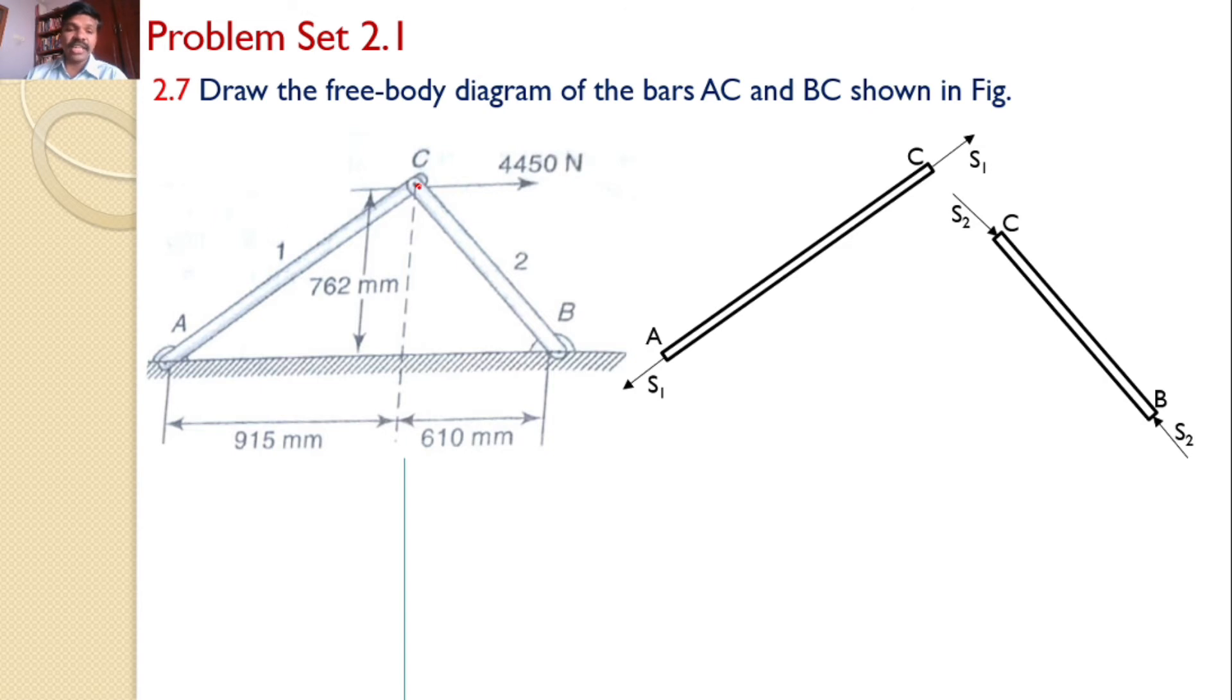What are the various forces acting at C? At C the force is 4450, one force is acting. Another force is the force in the bar AC, and another force is the force in the bar CB, but here the magnitudes and directions are also important. First let us calculate the angles made by the bars AC and CB. Let the angle made by bar AC with the horizontal be alpha and the angle made by CB with the horizontal be beta.